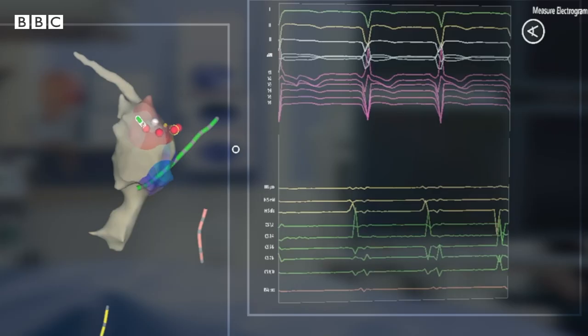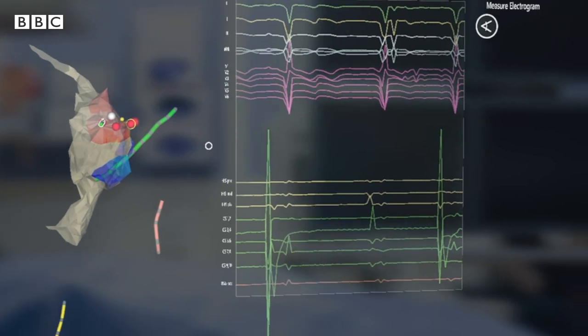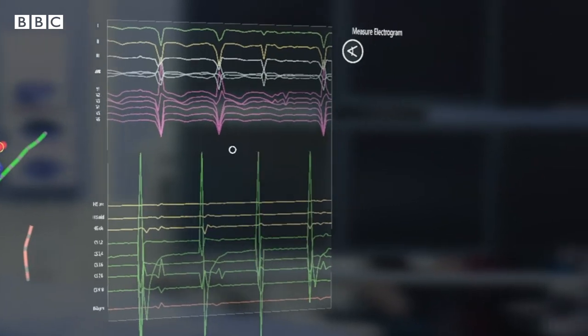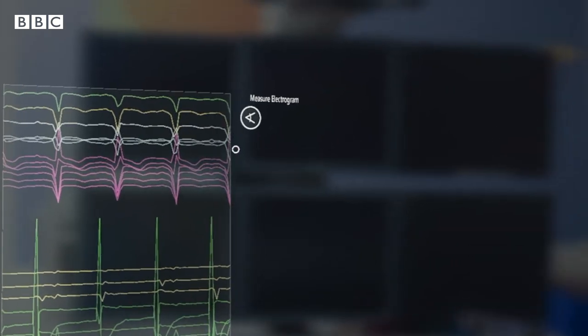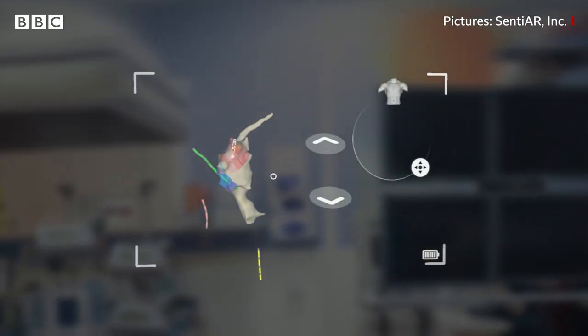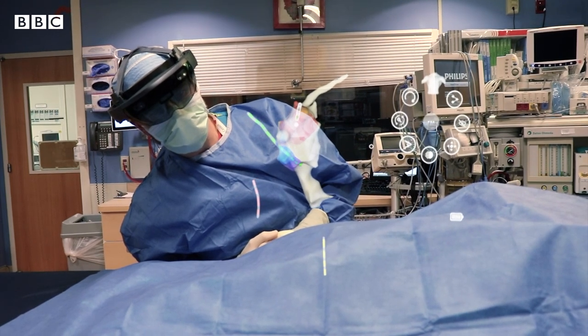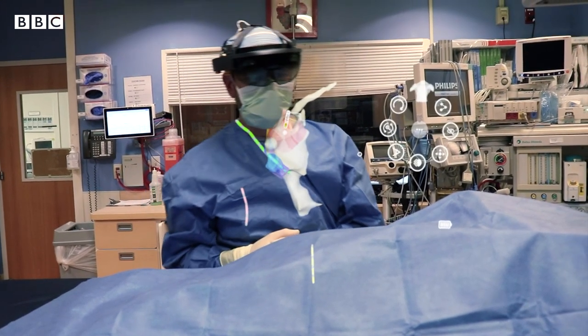And we do that by connecting it to a system known as an electrical anatomic mapping system. Those have been around for a while, but everybody's been looking at that data on two-dimensional screens. They haven't had it right in front of them in 3D, where they can control it and turn it left and right and up and down, and even just move their head around the corner to see another side of it in a very intuitive way.